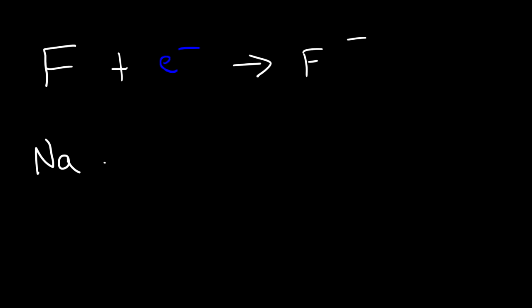Sodium wants to give away an electron to form a positively charged cation. So nonmetals tend to be electronegative — they like to acquire electrons. Metals, on the other hand, tend to be electropositive — they like to give away electrons and form positively charged ions.